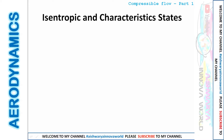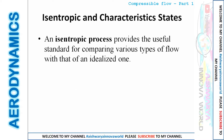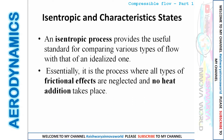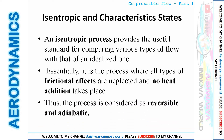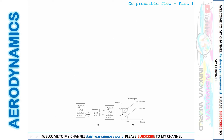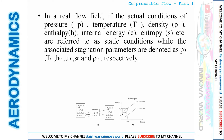Now I will explain isentropic and characteristic states. An isentropic process is a standard process where frictional effects and heat addition are neglected — there is no frictional effect and no heat addition. This process is also called reversible and adiabatic. Consider a reservoir where fluid velocity is zero (V = 0), and fluid escapes from the exit at a real state.